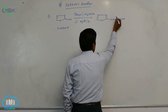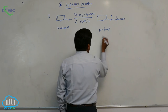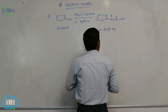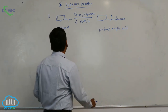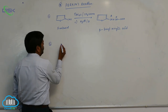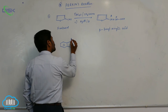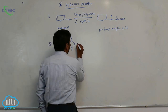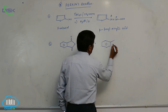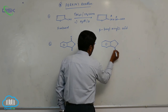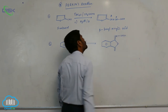The product is alpha, beta — beta-furyl acrylic acid. The third example related to Perkin reaction uses phthalic anhydride. Phthalic anhydride reacts with the same reagents to form a product with oxygen, C double bond O, then CH, CH, COOH, COOH.